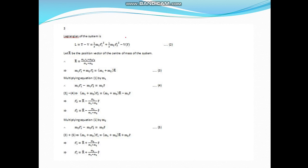The Lagrangian is T minus V, kinetic energy of first particle, kinetic energy of second and minus V. R is the position vector of the center of mass. Using the formula for position vector of center of mass, cross multiply to get equation 3.